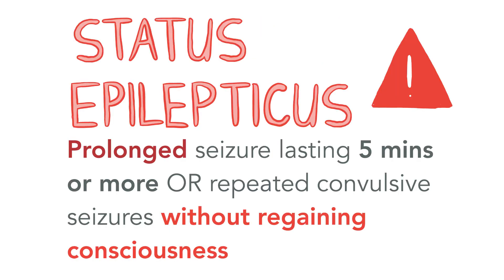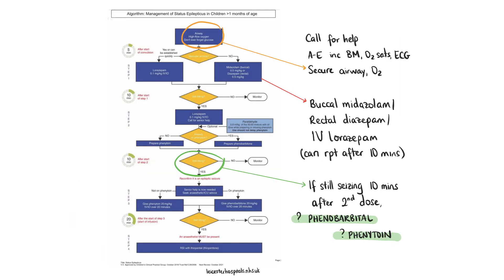Status epilepticus is defined as a prolonged seizure lasting five minutes or more, or repeated convulsive seizures — that is three or more in an hour — without regaining consciousness. It's a medical emergency. Call for help and perform an A to E assessment. Secure the airway, provide high-flow oxygen and perform an ECG. Measure blood glucose and insert two wide-bore cannulae, one on each arm. First-line treatment is buccal midazolam or rectal diazepam; if IV access is already established, IV lorazepam can be given as an alternative.